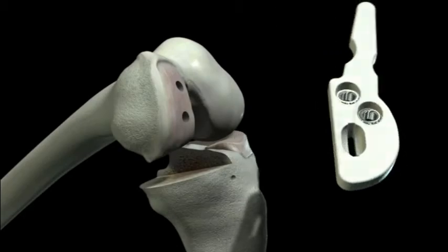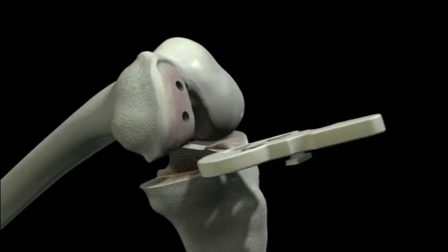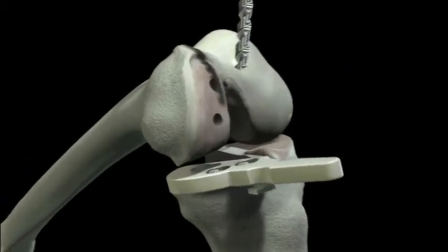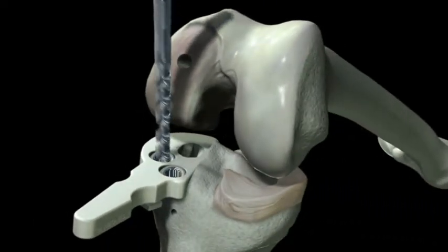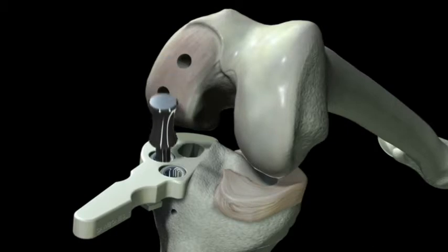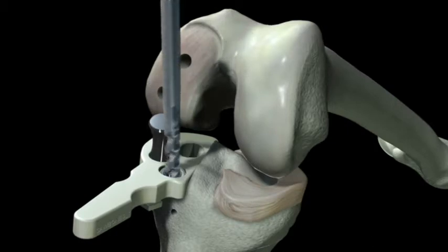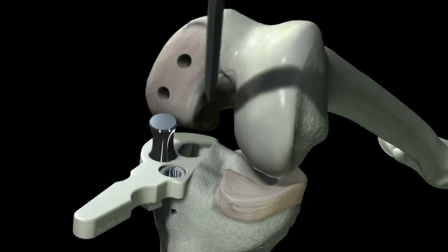Step 5: Tibial preparation. Place the tibial template on the tibia. Drill both holes but pin the posterior hole only to accommodate instruments for the upcoming fin hole preparation. Create the fin hole using a 5mm osteotome.